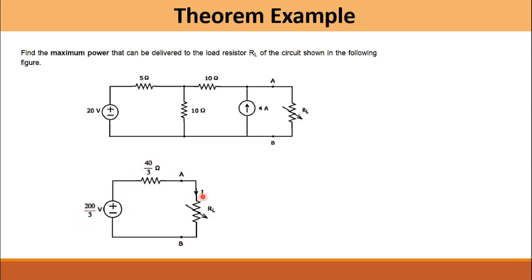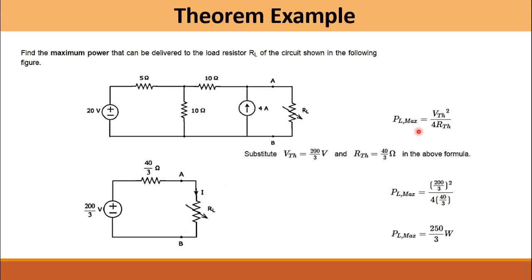Applying the formula, V_Thevenin equals 200/3 volts and R_Thevenin equals 40/3 ohms. Substituting these values, the maximum power that can be absorbed by this load is approximately 82 watts. In that case, R_L must be equal to 40/3 ohms.